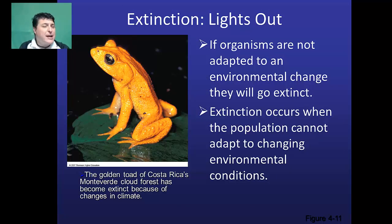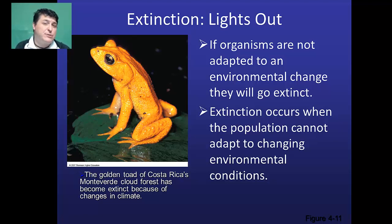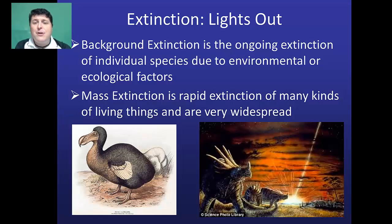The opposite of speciation is extinction. Extinction occurs when organisms are not adapted to a particular environmental change and as a result they die out or go extinct. For example, the golden toad of Costa Rica in the Monteverde cloud forest has become extinct as a result of changes in the climate.